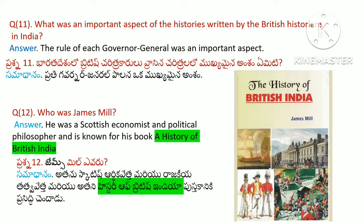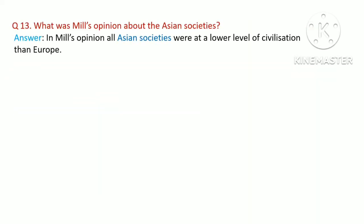James Mill was a Scottish economist and political philosopher, known for his book A History of British India. In Mill's opinion, all Asian societies were at a lower level of civilization than Europe.